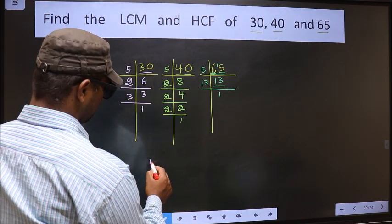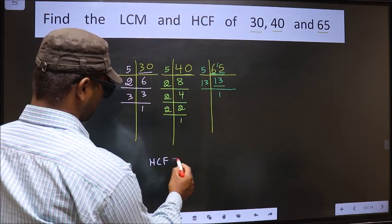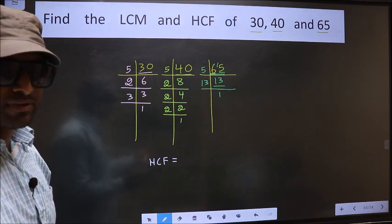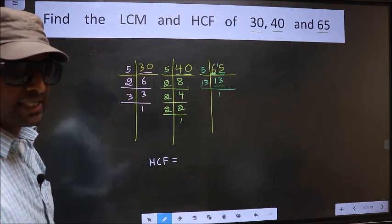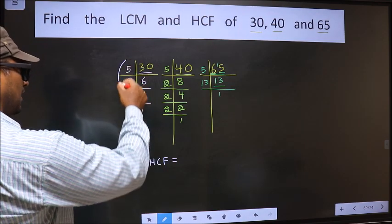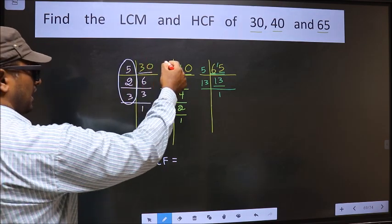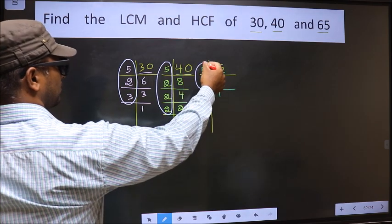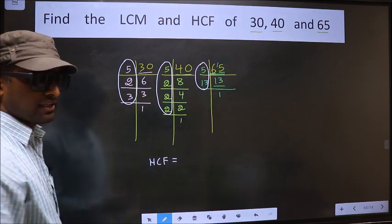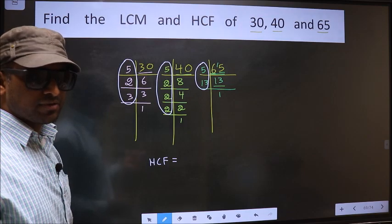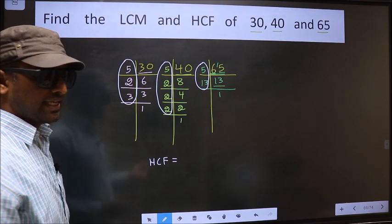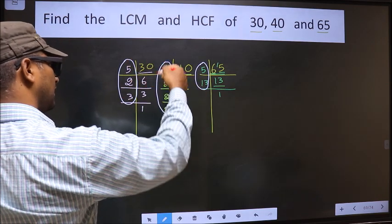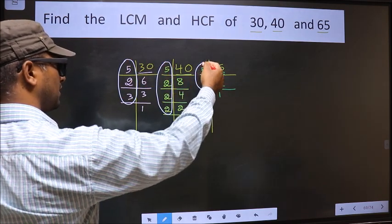So our HCF is, HCF is the product of numbers which should be present over here and here and also here. I repeat, HCF is the product of numbers which should be present in these 3 places. That is here, here and also here.